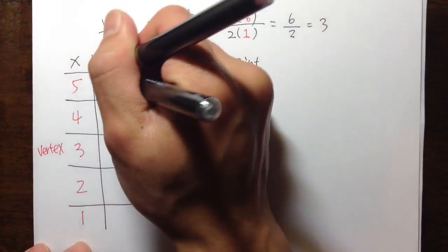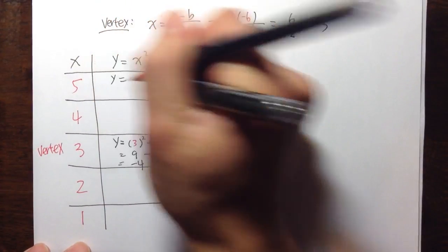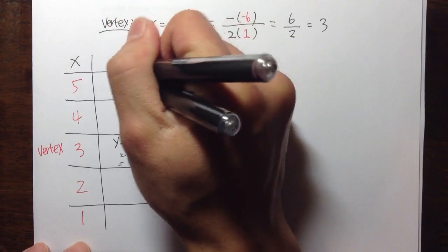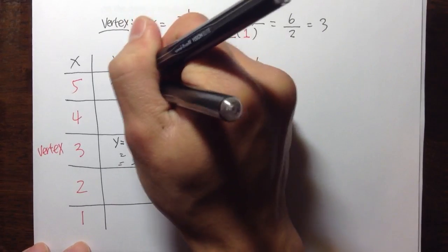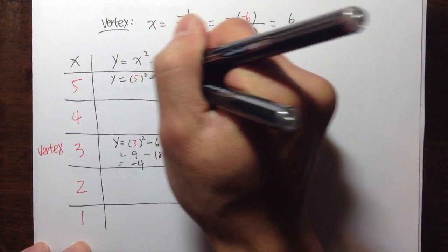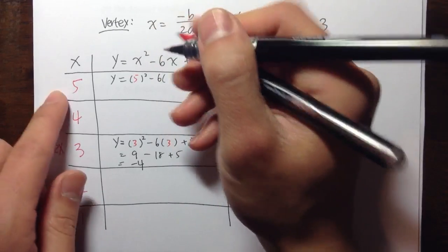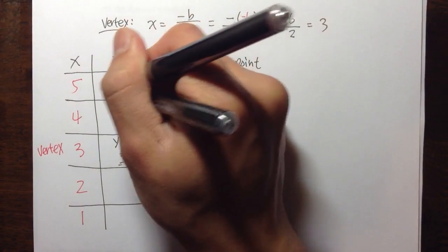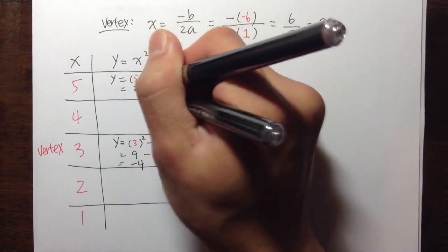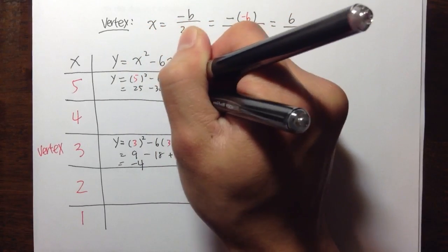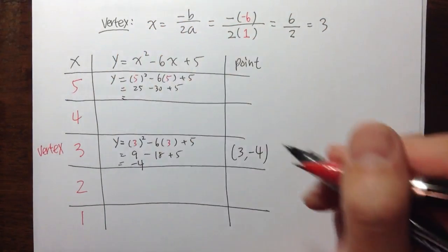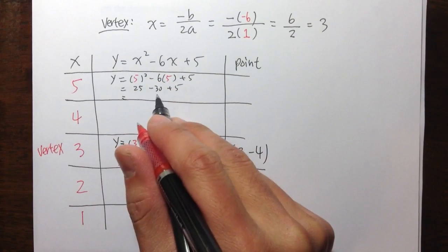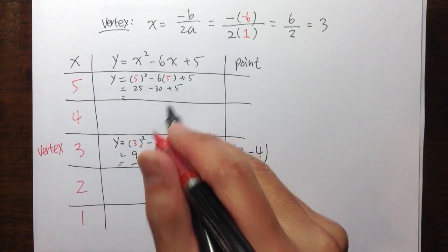For x equals 5: y is equal to 5 squared minus 6 times 5 plus 5. This is equal to 25 minus 30 plus 5. 25 minus 30 is negative 5, plus 5 equals 0. So the point is (5, 0).